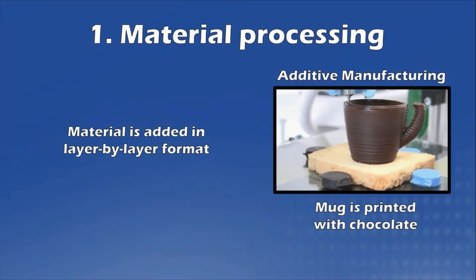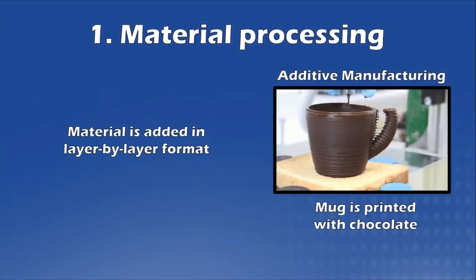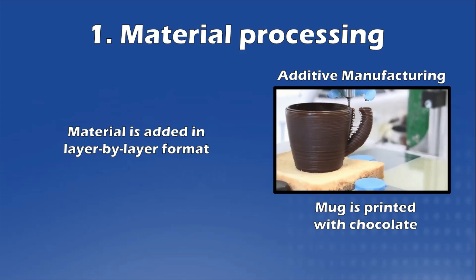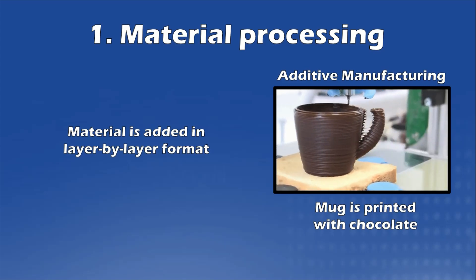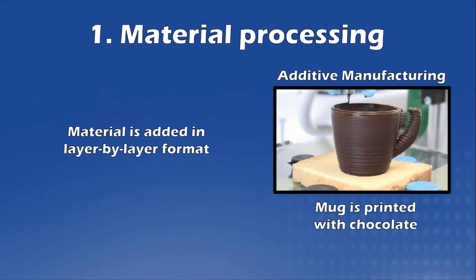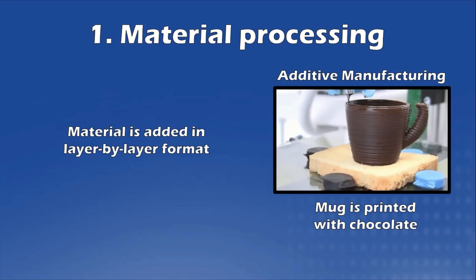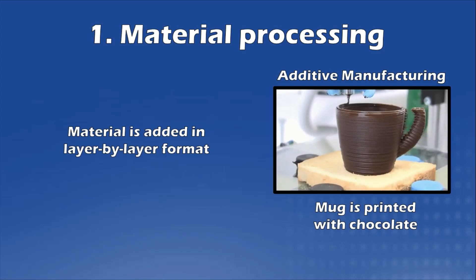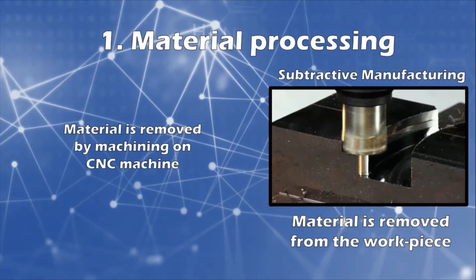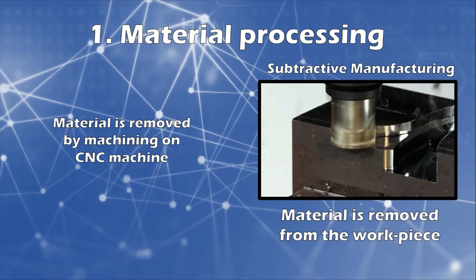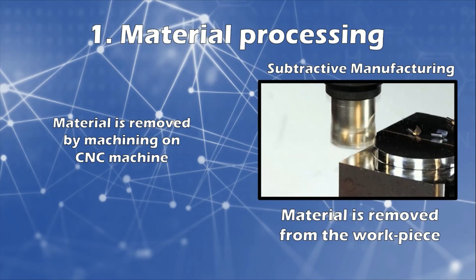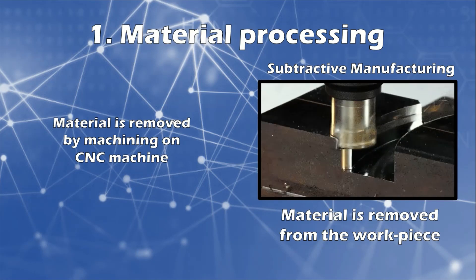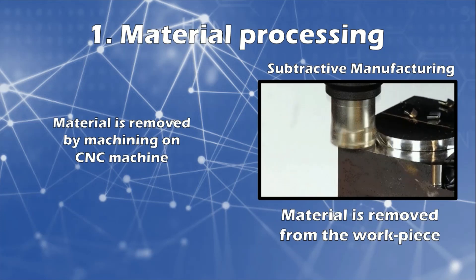Number one: material processing type. Additive manufacturing is a process that adds successive layers of material to create an object, often referred to as 3D printing. The object is created by adding material in a layer-by-layer format. On the other hand, subtractive manufacturing — as the name suggests — is quite the opposite. Rather than adding layers, material is removed by machining, either manually on a lathe machine or automatically with a CNC machine.